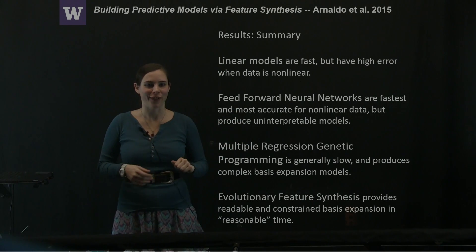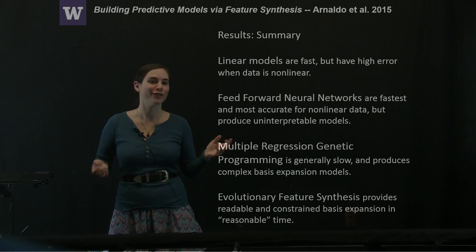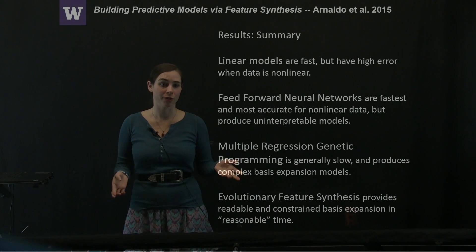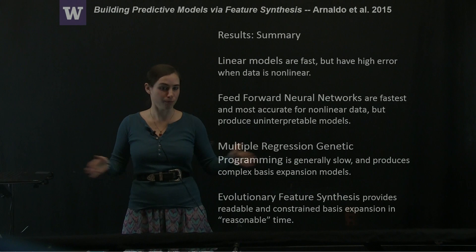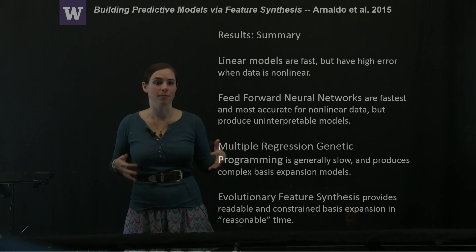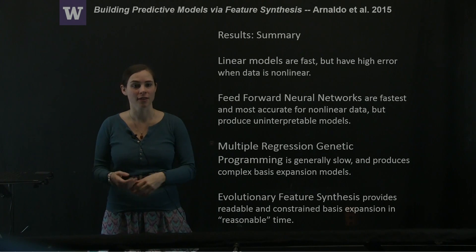So, in summary, linear models are fast, but they don't work very well when you have highly nonlinear data. Feedforward neural networks are really the fastest nonlinear type of data fitting method you can use, at least in this case. However, the downside is they produce completely uninterpretable models.